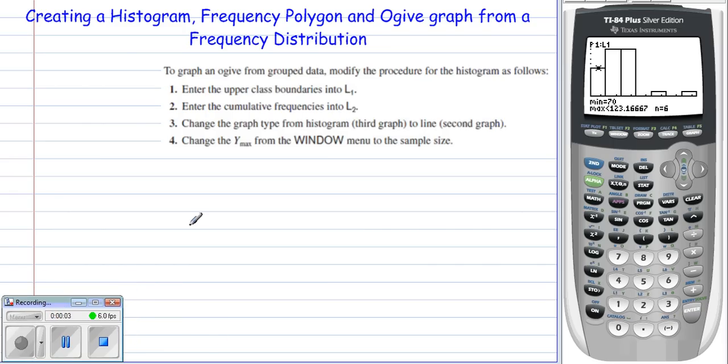All right, so now let's take a look at how we will take this information from a set of data from our histogram and use that to create either a frequency polygon or an ogive graph. Our main thing here is you'll notice in the directions that we're going to need to enter the upper class boundaries.